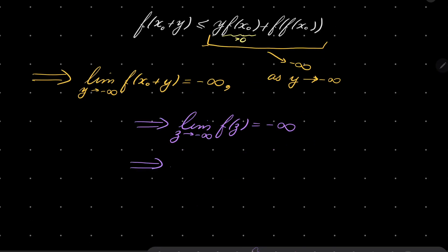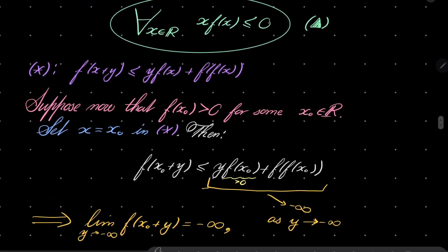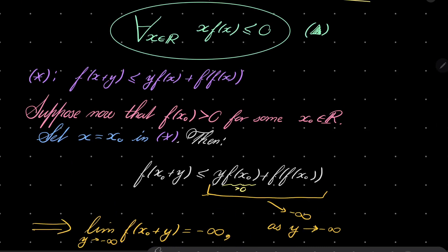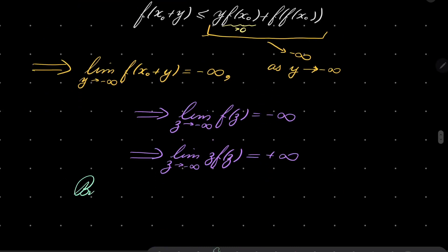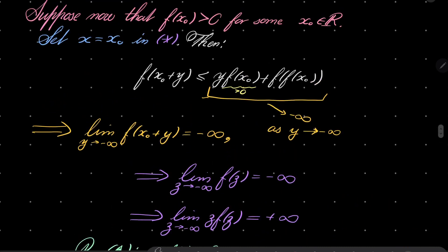But this implies that the limit as z goes to minus infinity of z times f of z equals plus infinity, because minus infinity times minus infinity is plus infinity. Now we have a problem, because by condition triangle, z times f of z is bounded above by zero. This gives a contradiction, so our supposition that f of x-zero is positive for some x-zero is simply false.